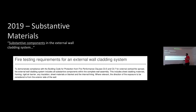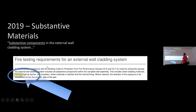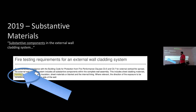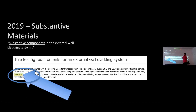Substantive components further defined the cladding guidance in 2019 — and right there it says framing. Framing must be considered and must be non-combustible. That's CAS2 in the 2019 version. I don't know how people have missed this, including MBIE, in a document that says don't worry about the framing, it's going to be fine.